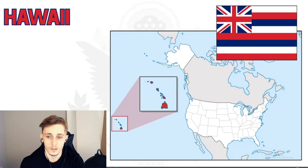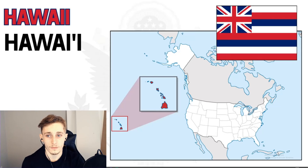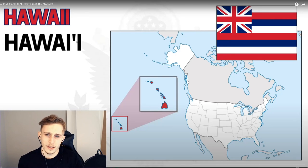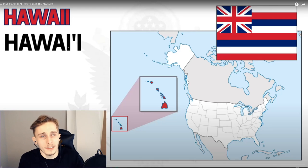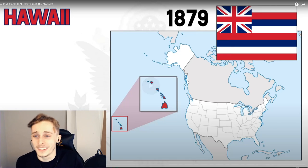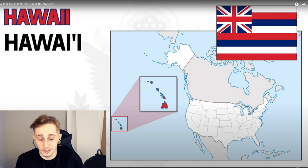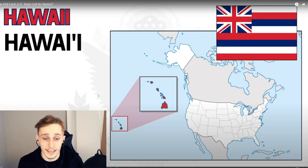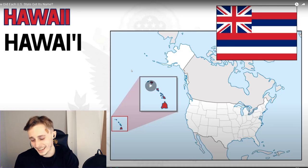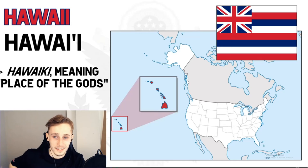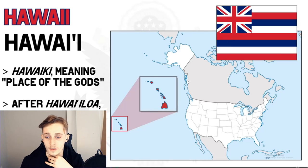Hawaii's name origin is less certain. The first registered use was in 1879, originally spelled with an apostrophe between the two i's. There are two hypotheses: one is that it comes from 'Hawaiki,' meaning 'place of the gods,' the mythological homeland of the Polynesians, and the other is that it was named after Hawaii Loa, a legendary discoverer of the Hawaiian Islands.